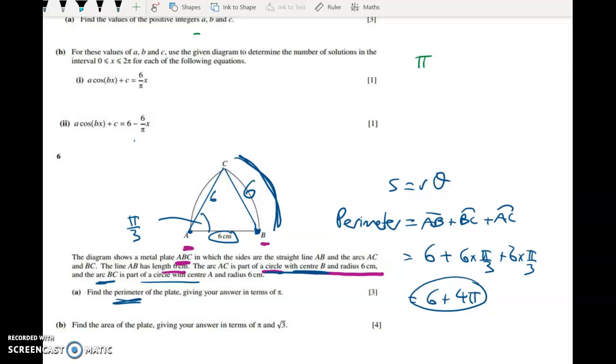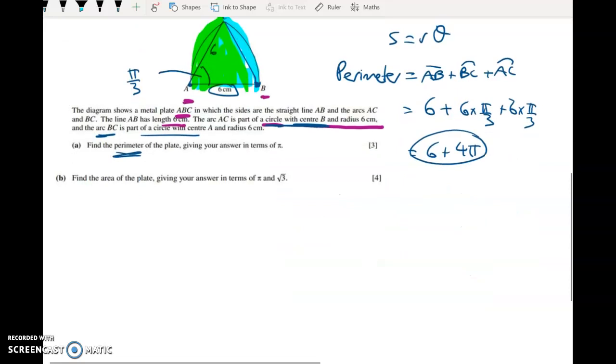Now let's look at the area of the plate. There's lots of different ways to do this, but the way I did it is I can easily find the area of that sector, and then I can easily find the area of this sector, but then I've double counted the triangle. So we're going to find the area of the two sectors and take out the overlap. For this, I need the area of a sector formula, which is a half R squared theta.